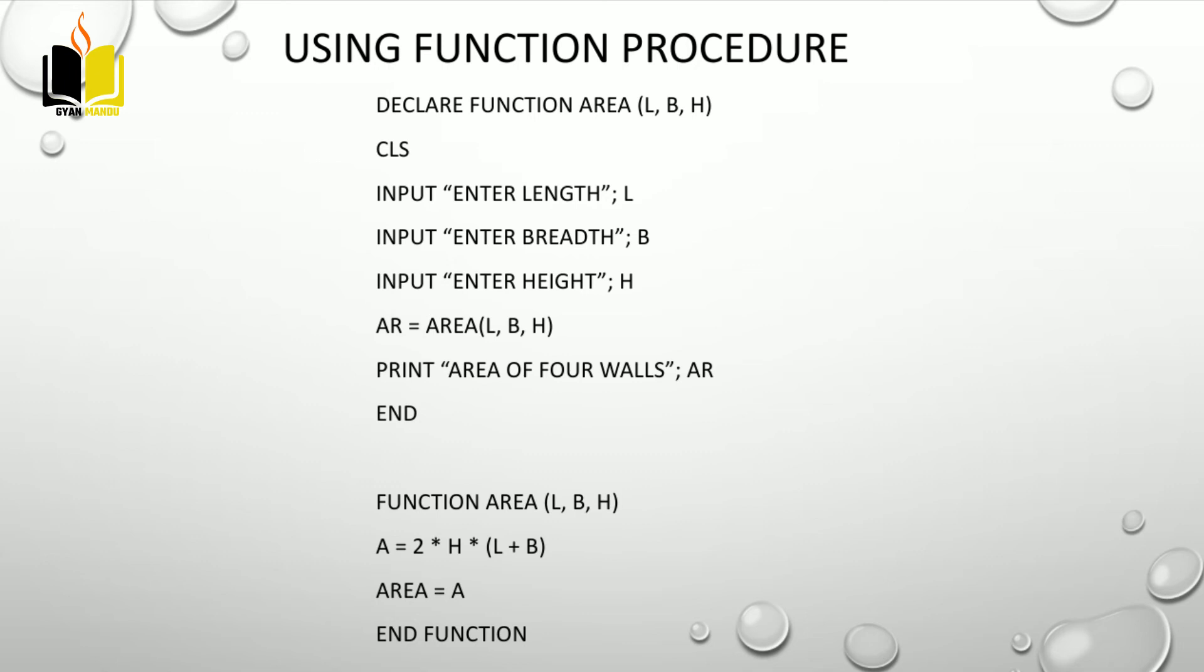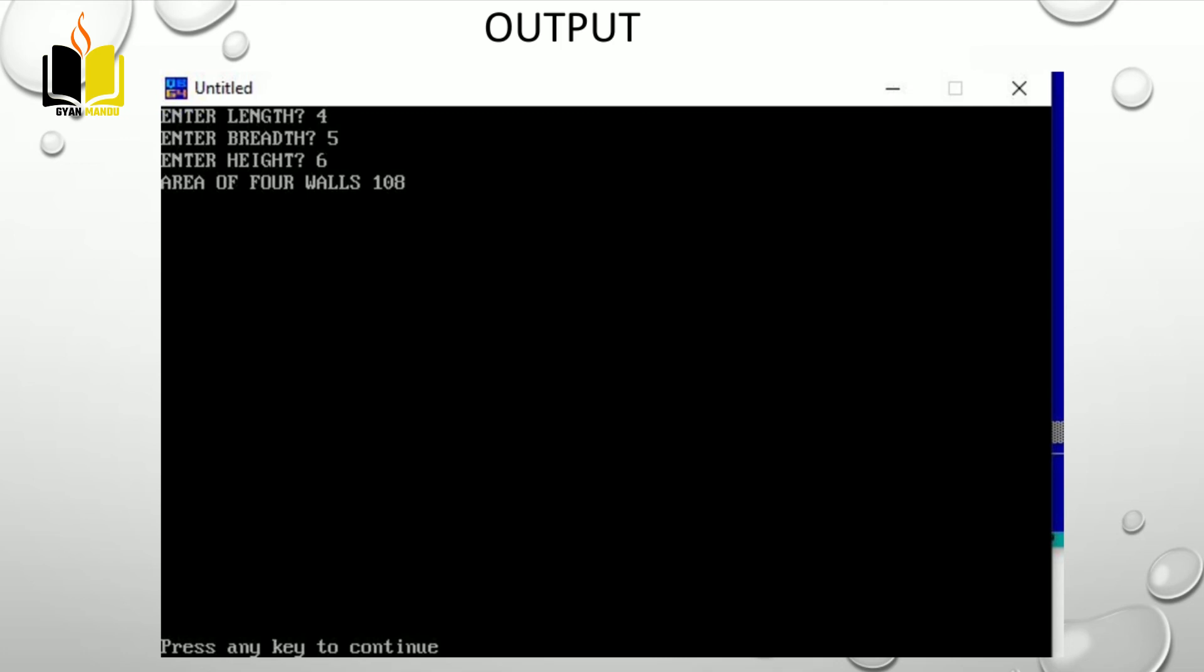The answer: length 4, breadth 5, and height 6. Area of four walls equals 108.